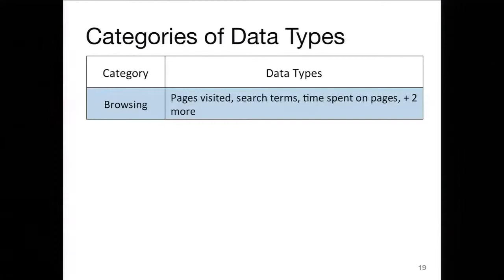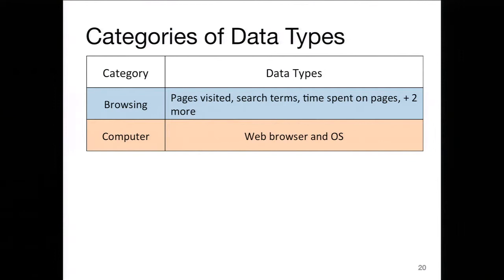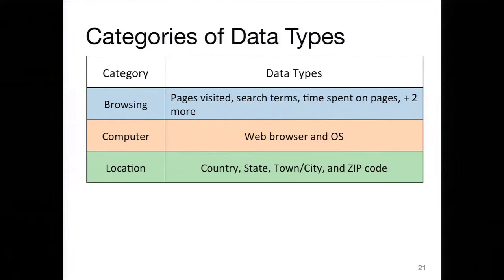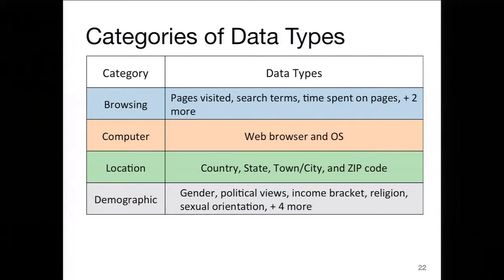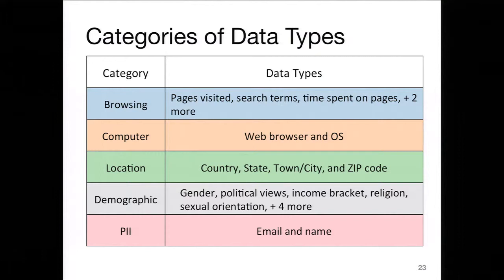In our cluster analysis, we identified several categories from the 30 types of data. One category is browsing information — pages visited, search terms, time spent on pages. Another is computer information — just your web browser and operating system. Location information included country, state, town, city, and zip code — not exact GPS location, more like address information. Demographic information included gender, political views, income bracket, religion, sexual orientation, and four other things. Finally, personally identifiable information was your email address and your name.